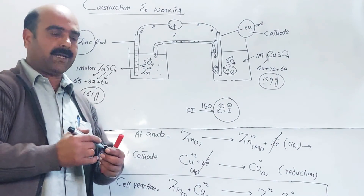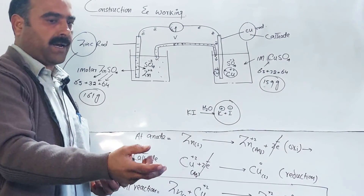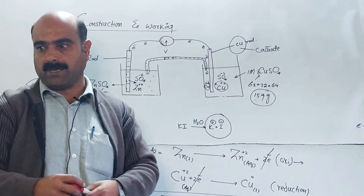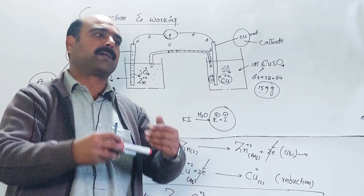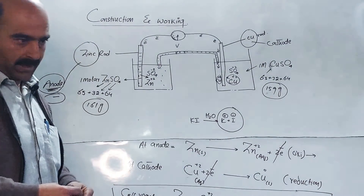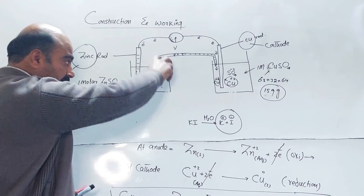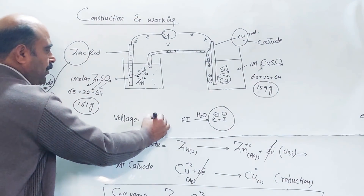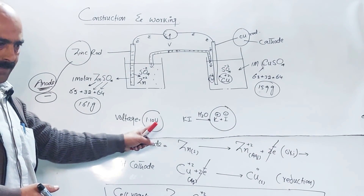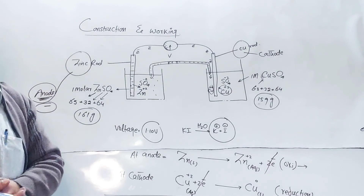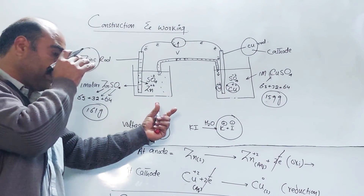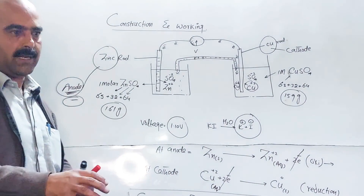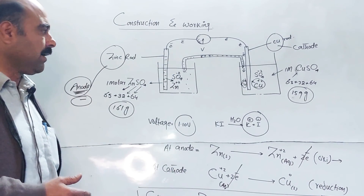This spontaneous redox reaction produces electric current, which can be used for lighting, heating, sound, or AC supply. The Daniel cell is a good example — similar to a battery. The total voltage of this specific Daniel cell is 1.10 volts. An appliance with a voltage requirement higher than what the cell provides cannot be operated from it. Each cell has its own specific voltage capacity. This covers the construction and working of the galvanic cell, voltaic cell, or Daniel cell.